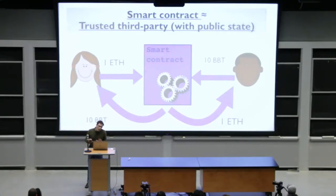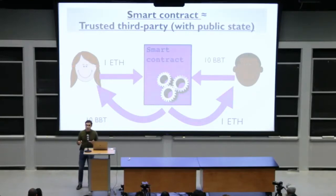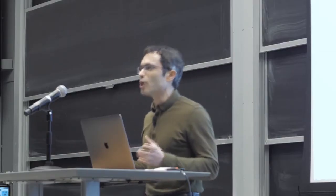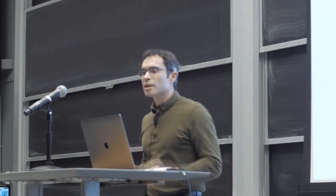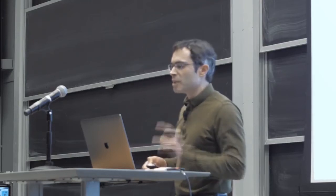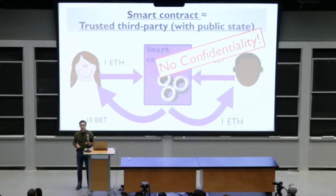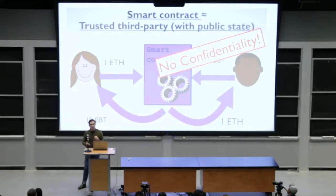Smart contracts do this in a particular way — namely with public state. The behavior of the smart contract and all of the data it operates on are visible on the blockchain and therefore visible to the whole world. This is something of a drawback because it means smart contracts don't offer confidentiality. In addition, because they're executed on-chain, they typically have poor performance.